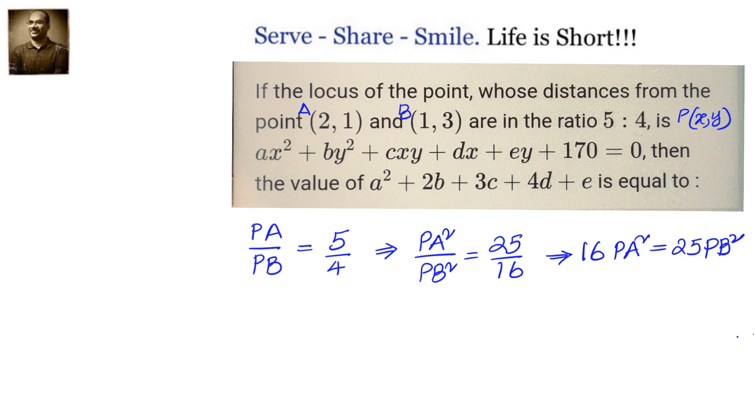Now let us see what PA² and PB² are. Using the distance formula squared, we get 16[(x-2)² + (y-1)²] = 25[(x-1)² + (y-3)²].